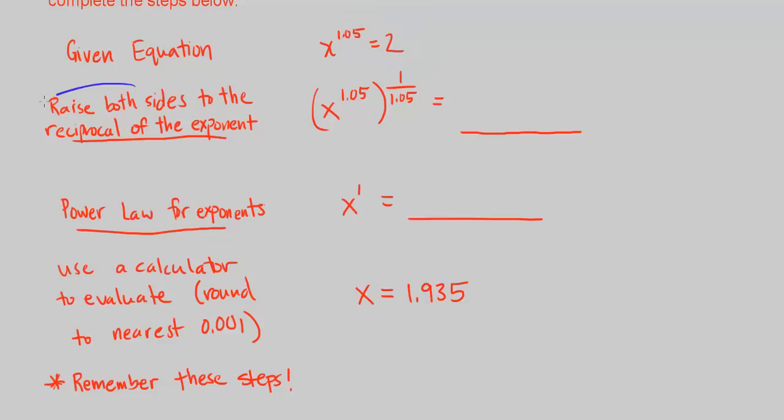Then we want to raise both sides to the reciprocal of the exponent. So the reciprocal of 1.05, remember this is over 1, so the reciprocal is 1 over 1.05.